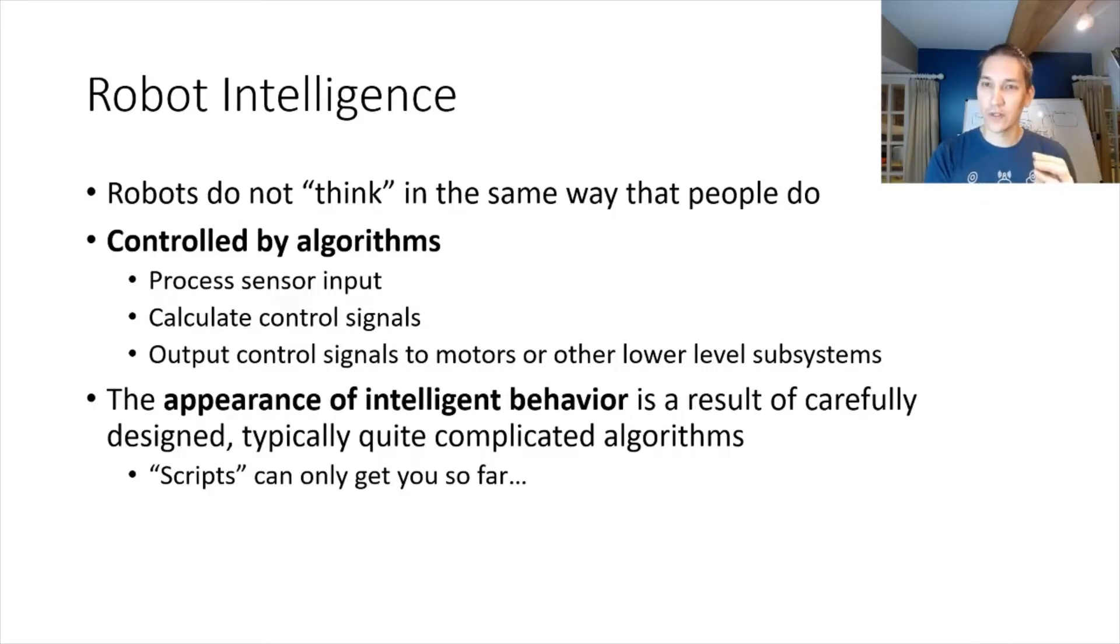These algorithms need to process sensor input, predict what might happen in the world if we were to do certain things, and also then plan to produce sequences of actions, which we can then output to our low-level motors. These algorithms can be quite complex, and they have to be very carefully designed. We can't just think about this as a form of scripting. It's not as easy as for loops and if statements. These can get you only so far. They can do simple things like maze following, but they can't do complex things like grasp planning and other forms of manipulation that we need to try to achieve in this course.